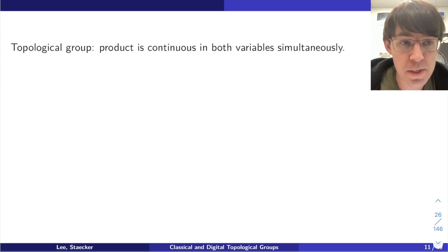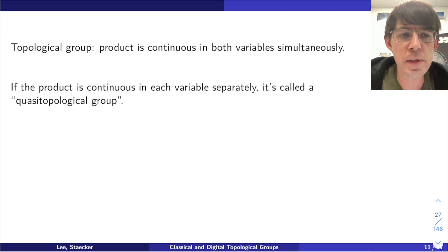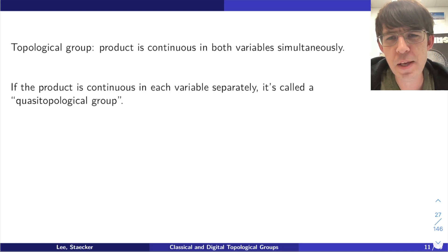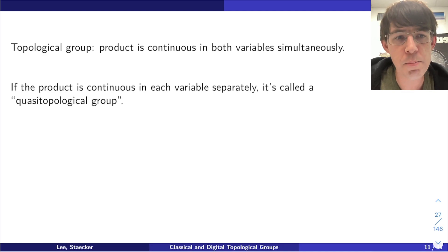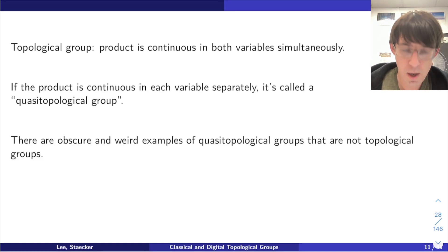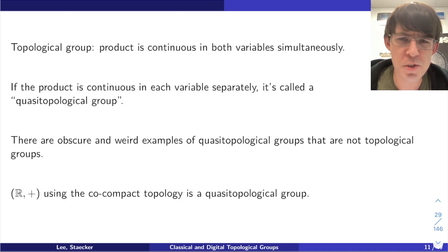A topological group is one in which the product is continuous in both variables simultaneously. There is actually a word for when it's continuous only in one variable at a time — this is called a quasi-topological group. And there are examples of things which are quasi-topological groups but not topological groups. One obscure example is R with the plus operation and the co-compact topology, where you declare a set to be open when its complement is a compact set. That turns out to be a quasi-topological group but not a topological group.